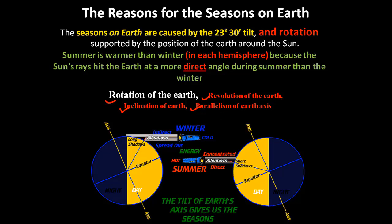Now you will understand what is parallelism. The earth on its own axis has a tilt of 23 degrees 30 minutes on the vertical plane. Throughout the year, while the earth is rotating on its own axis and at the same time revolving about the sun, the axis of the earth will remain parallel to itself. There is no change in the parallelism of the earth's axis. These are the primary reasons for the seasons on earth.